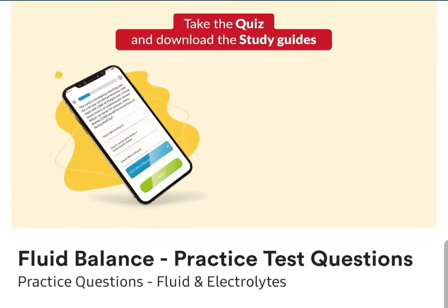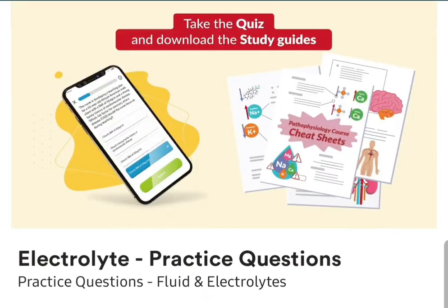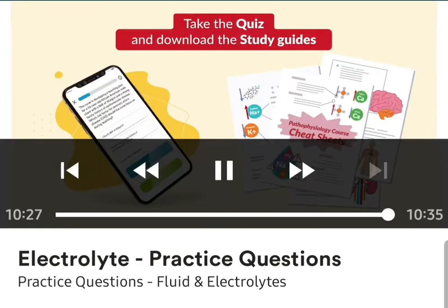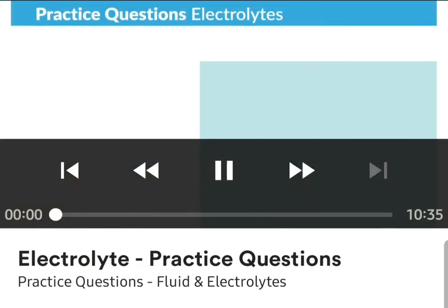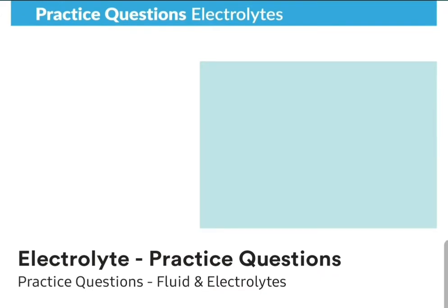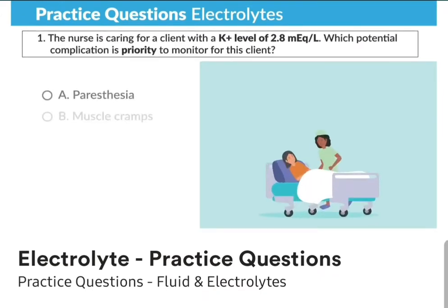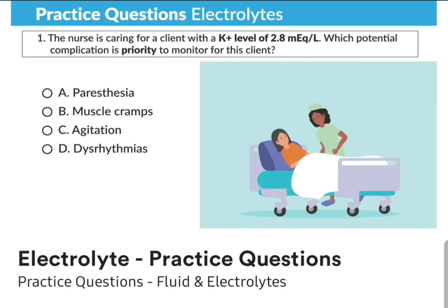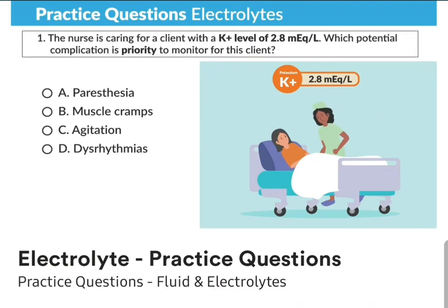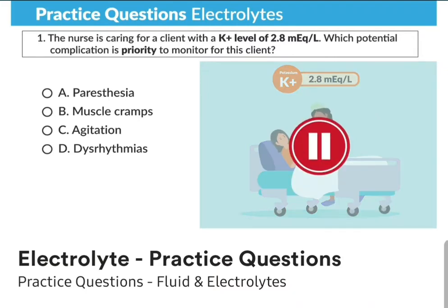That wraps up the fluid balance questions. Now for practice questions on electrolytes. Question one: the nurse is caring for a client with a potassium level of 2.8. Which potential complication is priority to monitor for this client? Pause the screen and try your best to answer this question in about 60 seconds or less.